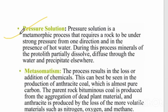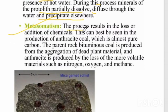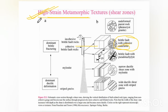During pressure solution, the rock is under strong pressure from one direction, causing the protolith to partially dissolve, diffuse through water, and precipitate elsewhere. Metasomatism is the process resulting in the loss or addition of chemical components — best seen in the production of anthracite coal, which is an almost pure form of carbon. High-strain metamorphic rocks like cataclasite are found in the brittle zone at shallow levels; with increasing depth, mylonite forms due to ductile deformation.